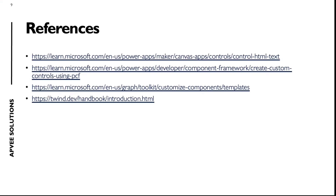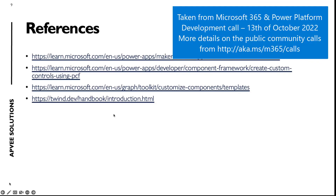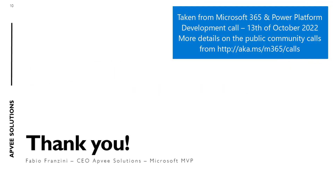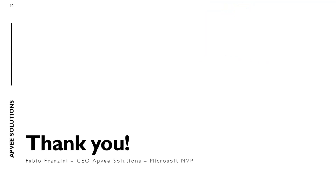These are the references I want to show you for this control: the reference for the HTML text control for Canvas apps, how to create components using the PowerApps component framework, how to use the template from the Microsoft Graph Toolkit to implement the template for this control, and an introduction to Twind — the library to implement Tailwind CSS inside your HTML template. Thank you. Really cool stuff — I've included those links in the chat for everyone to reference.